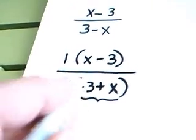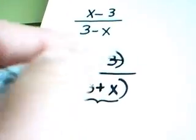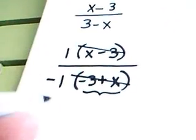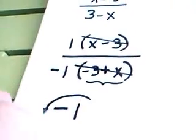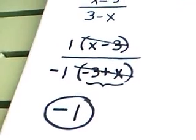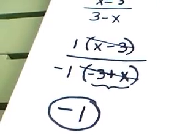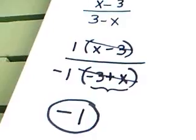x minus 3, x minus 3, match and cancel. 1 divided by negative 1 becomes negative 1. And that is what that expression became, in lowest terms, negative 1.